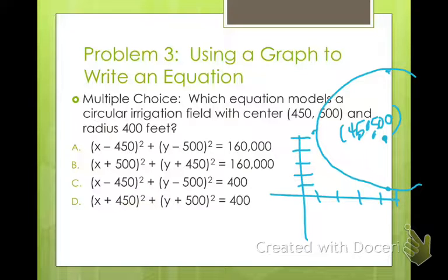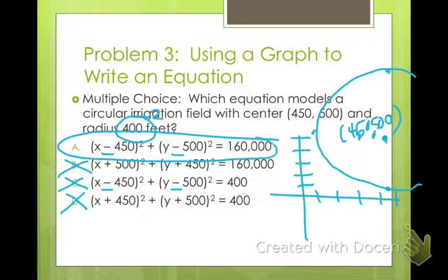I'm going to be over here, over here, up here, and then off where you can't see. If I connect those, this is (450, 500). Both of these are going to become minuses. Minus, minus, that one's good, that one's not. Now we need to see our radius is 400. In order to find our equation, we have to square it. Instead of 400, it's 160,000. So A is your correct answer.